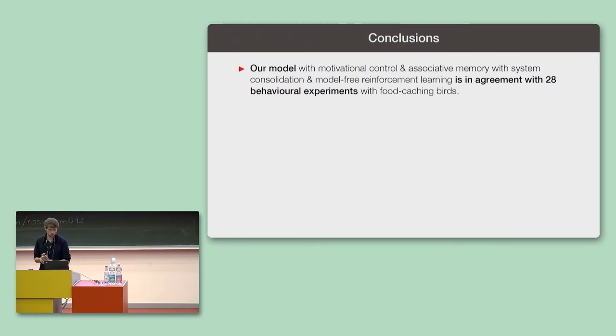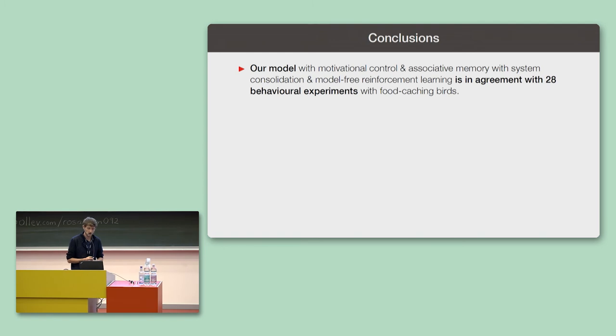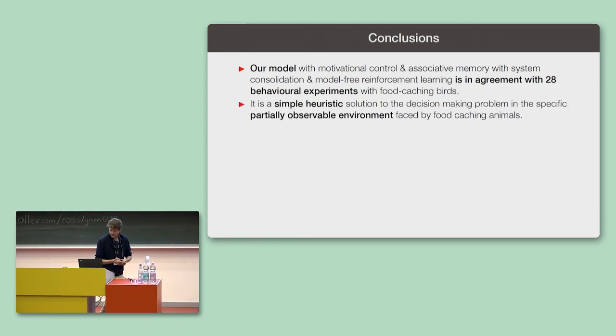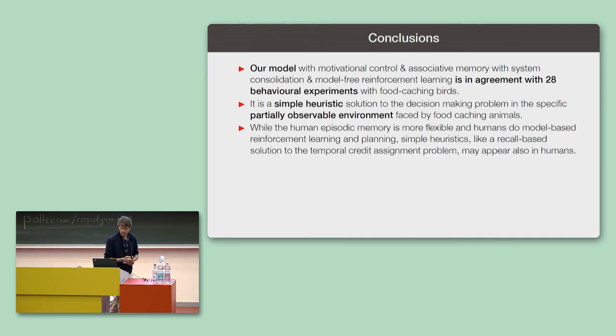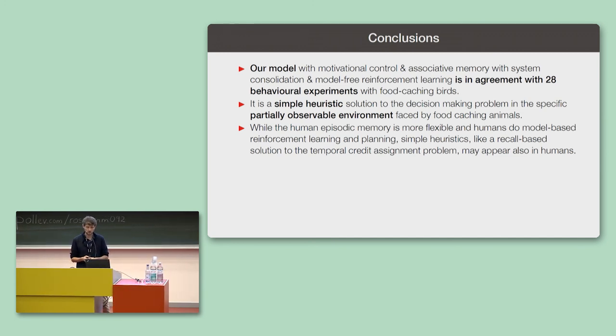So, in conclusion, our model with motivational control and associative memory with system consolidation and the model-free reinforcement learning mechanism is in agreement with these 28 experiments on behavior of food caching birds. It is a simple heuristic solution to the decision-making problem in the specific partially observable domain faced by the food caching animals. And to come back to the point that I made in the introduction, I think that while the human episodic memory is certainly more flexible and humans do model-based reinforcement learning and planning, maybe simple heuristics like this recall-based solution to the temporal credit assignment problem may also appear in humans.